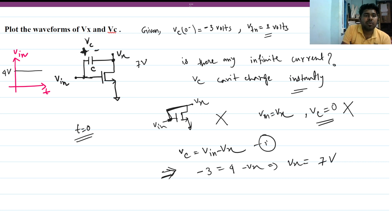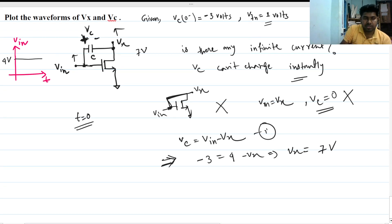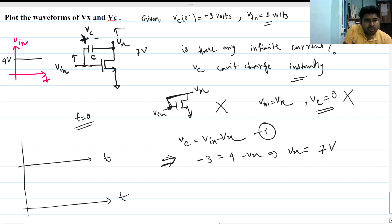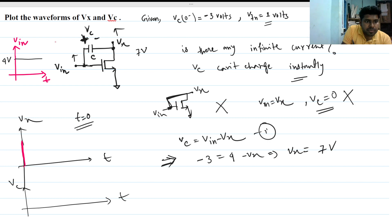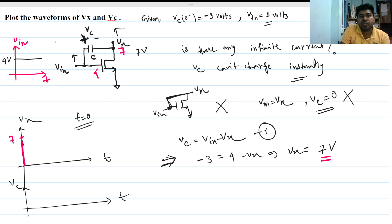What we are saying is the capacitor wanted to hold its previous value. So as Vin goes up, Vx has to go up as well, so that the voltage of the capacitor is maintained. At T equals 0, we can see that Vx goes to 7 volts and Vc stays at minus 3 volts. Now, since this is 7 volts for Vx and 4 volts for Vin, and the threshold voltage Vtn of the MOSFET is 1 volt, the MOSFET is always on because Vgs is always greater than Vtn.